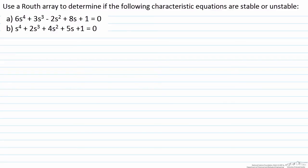In this screencast we'll examine how we can utilize a Routh array to determine whether or not a process, whether controlled or uncontrolled, is stable or unstable.